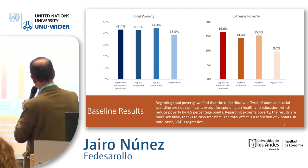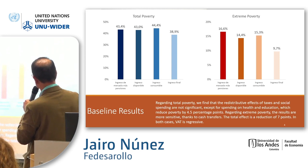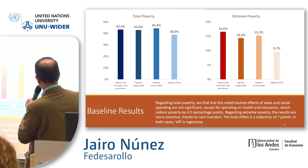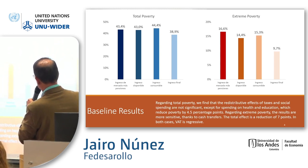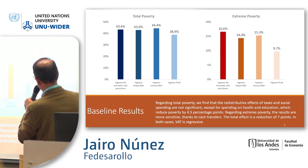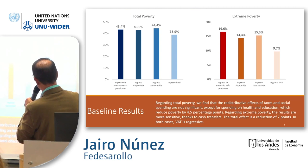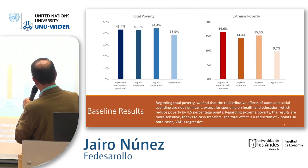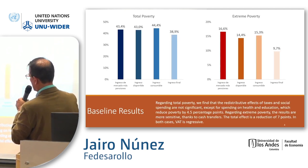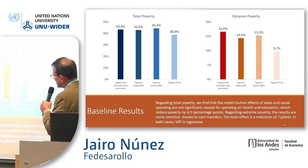Regarding extreme poverty, the results are more sensitive because of cash transfer subsidies and other transfers. The total effect from market income to final income is a reduction of seven points in extreme poverty after all the social spending and all the taxes in Colombia.